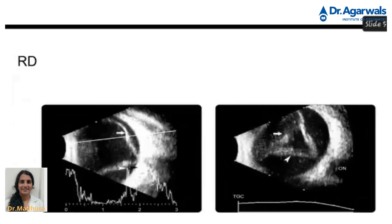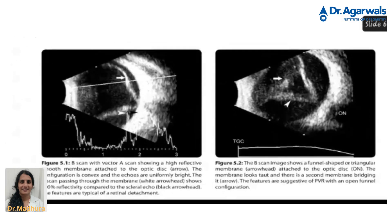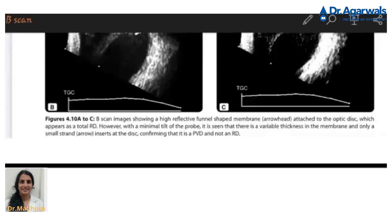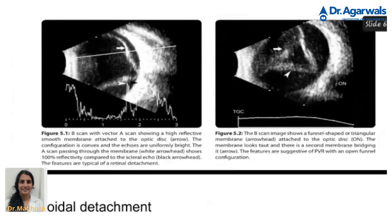Now another RD example: compared to the previous slide, you can see a funnel-shaped retinal detachment here. This is a smooth, highly reflective membrane which is attached to the optic disc. When doing a dynamic scan, you can see that its movement is pretty short compared to a PVD, which would show more dynamic movement.